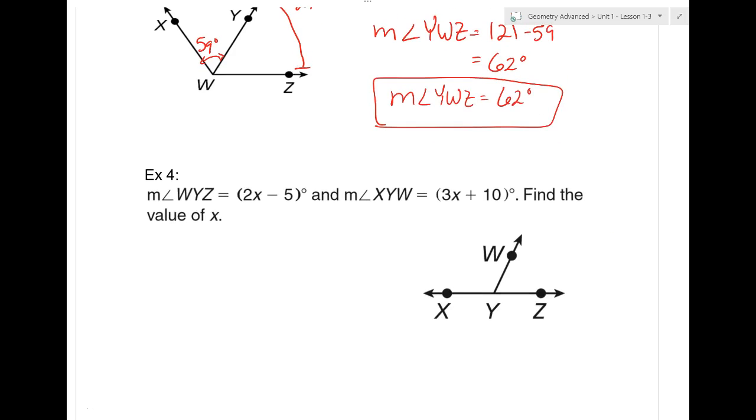For our quiz, do I just write sum of the parts equal the whole? It matters what I ask. If I ask what's a general idea, or what phrase could you use to describe the postulate, that totally works. Next problem here. It says the measure of angle WYZ is 2x minus 5 degrees. The measure of angle XYW is 3x plus 10 degrees. Find the value of x.